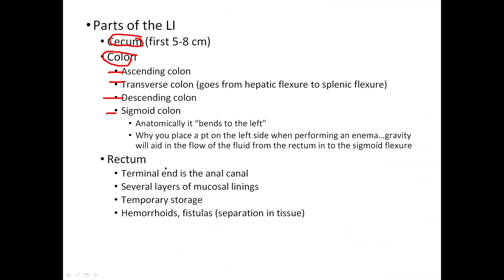The rectum is the terminal end and leads to the anal canal, which has mucosal linings. Conditions you can get in this area include hemorrhoids and fistulas — abnormal growths of tissue that hang out in the intestinal area. The appendix does have a function: it contains lymphatic tissue designed to help break down things that don't belong in that area. If it becomes overworked or inflamed, it can lead to appendicitis requiring removal.